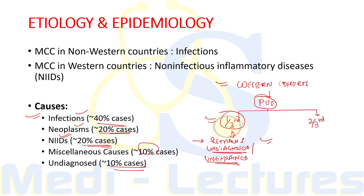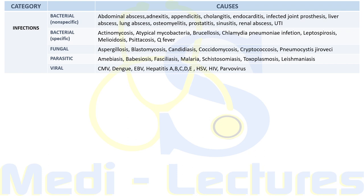Infections account for approximately 40% of total PUO cases. Non-specific bacterial infections include abdominal abscesses, appendicitis, cholangitis, endocarditis, joint prosthesis infection, liver abscess, lung abscess, osteomyelitis, prostatitis, sinusitis, renal abscess, and UTI — system-oriented infections where the individual organism is not yet identified. Specific bacterial infections by etiology include actinomycosis, Chlamydia pneumoniae, leptospirosis, melioidosis, Q fever, and rickettsiosis.